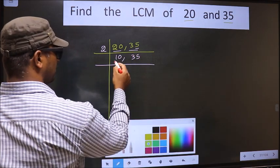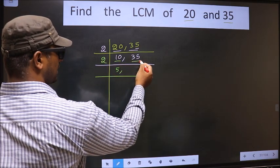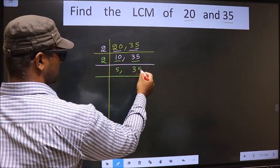Now here we have 10. 10 divided by 2 gives 5. The other number 35, not divisible by 2, so we write down 35 as it is.